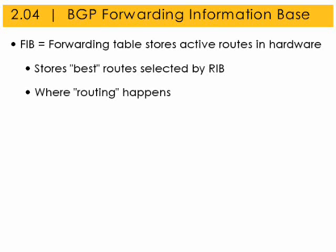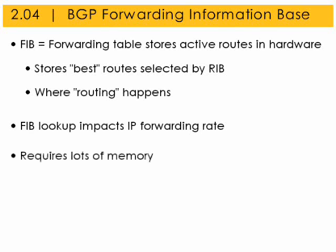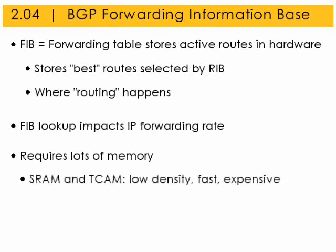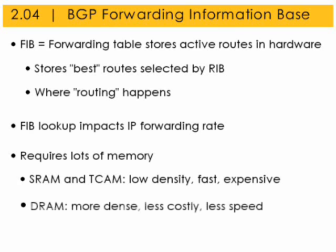The FIB lookup rate impacts the IP forwarding rate of the router. This IP lookup in the FIB requires lots of memory. Routers might use SRAM or TCAM memory modules, which are low density, fast, and quite expensive. Or they might use DRAM memory modules, which are more dense and less costly, but also not as fast as the other types of memory.